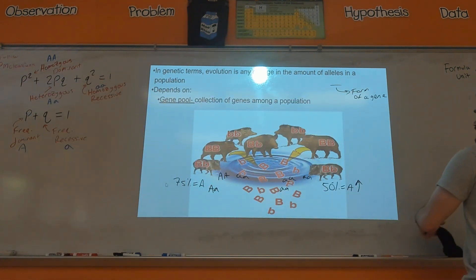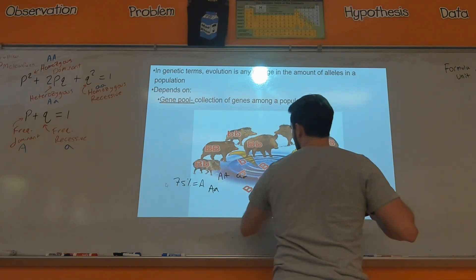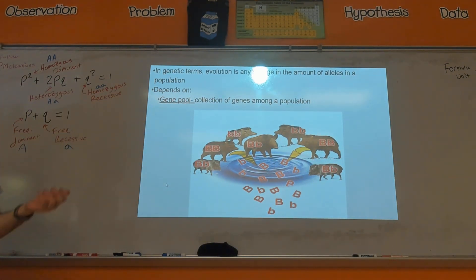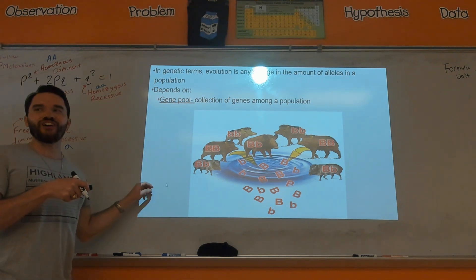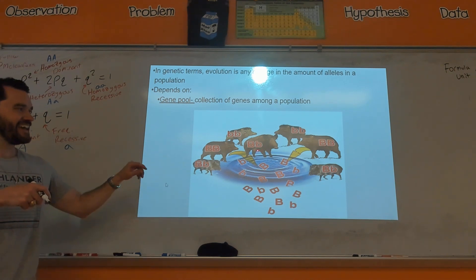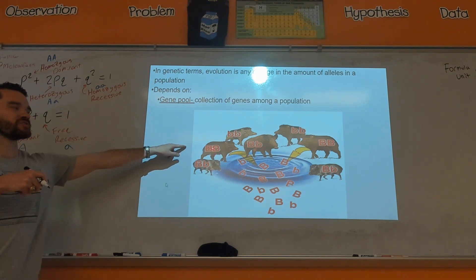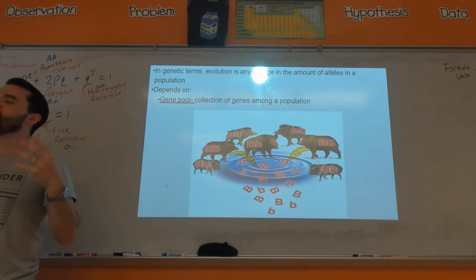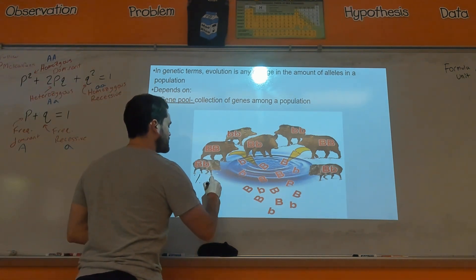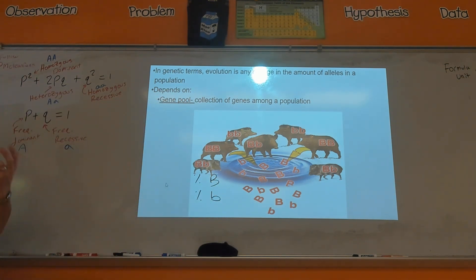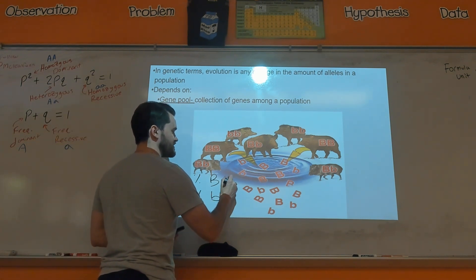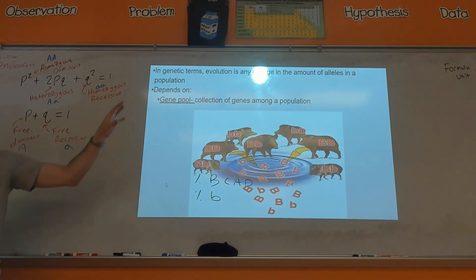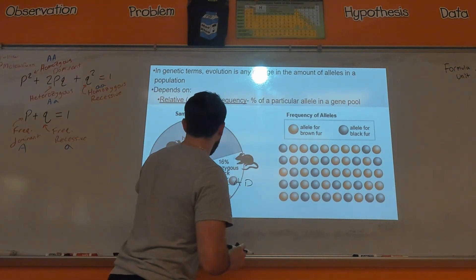Gene pool is a collection of genes among a population — similar idea but focusing on one specific population. Let's say the gene is the letter B. This hog is heterozygous, this one is homozygous dominant. If you take all the different alleles these individuals collectively have and put them together — the percentages of dominant and recessive, along with all the other genes like C, D, etc. — that collection of alleles is the gene pool.